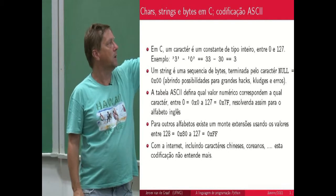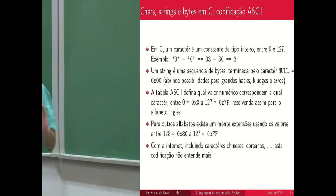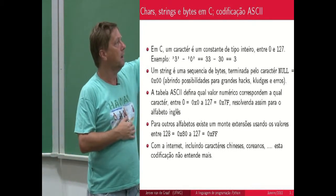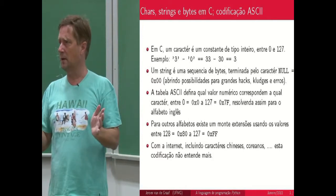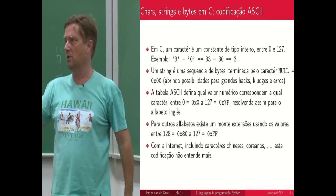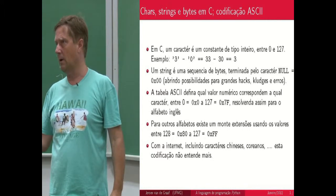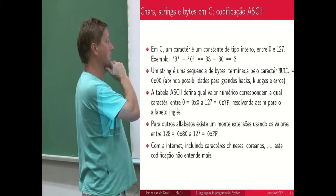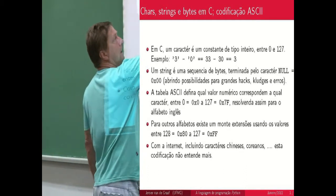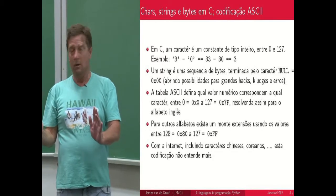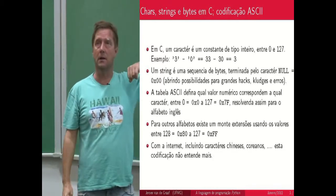ASCII — American Standard — foi baseado no alfabeto americano, há 30, 40, 50 anos atrás. O que acontece é que para qualquer carácter, eles definiram 128 caracteres e simplesmente têm uma tabela que fala: este carácter corresponde a este valor decimal e, portanto, ao mesmo valor representado em hexadecimal. Por exemplo, o 33 também pode ser representado de forma hexadecimal, e a representação hexadecimal do 33 corresponde ao carácter '3'.